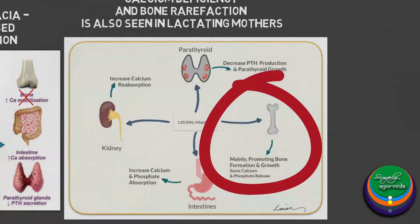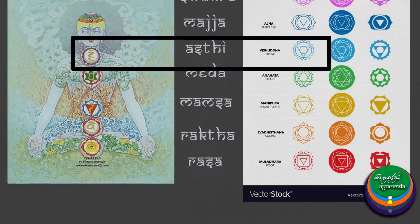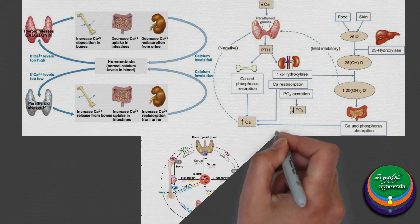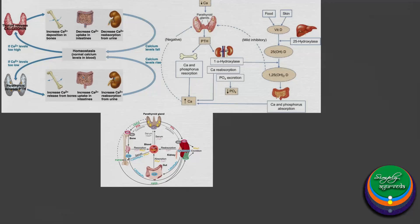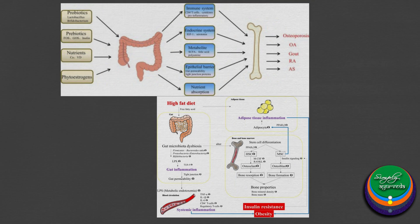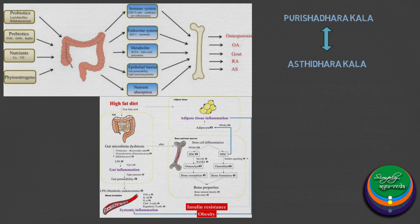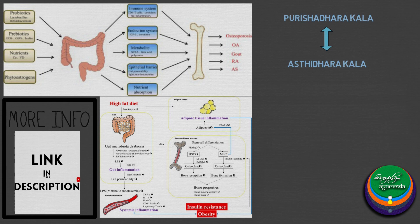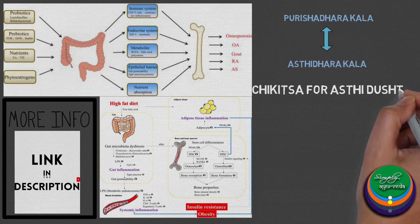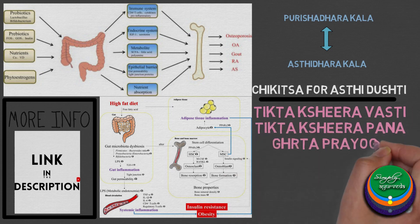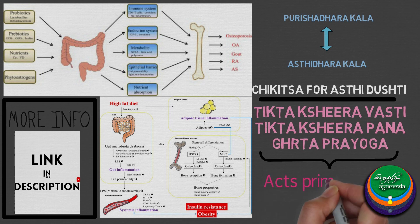Hope you could connect the dots. We learnt that Asthi dhatu is related to Vishuddha Chakra, which in turn regulates the thyroid and parathyroid glands. By observing the diagrams of metabolism of calcium, vitamin D and bone formation and resorption, it becomes evident that the Vishuddha Chakra plays a major role in regulating this. Furthermore, a lot of bone diseases are closely related to gut-related pathologies — an aspect being researched in recent times. The remedy for pathologies of bones is Tiktakshiravasthi, Tiktakshirapana and Gritha prayoga, which has a direct influence over the Purishadara kala.